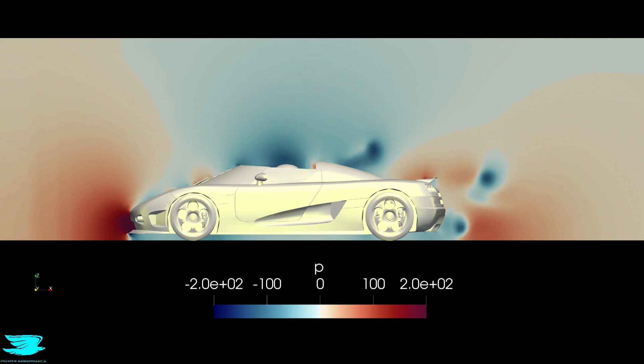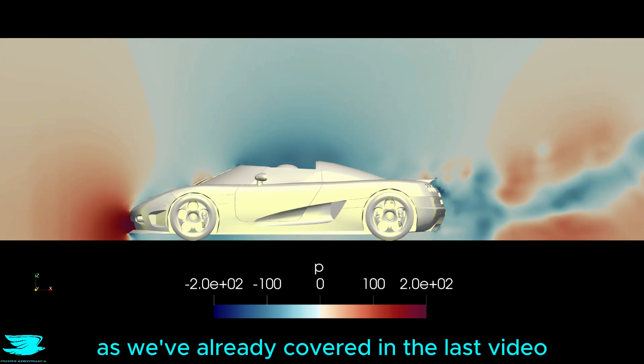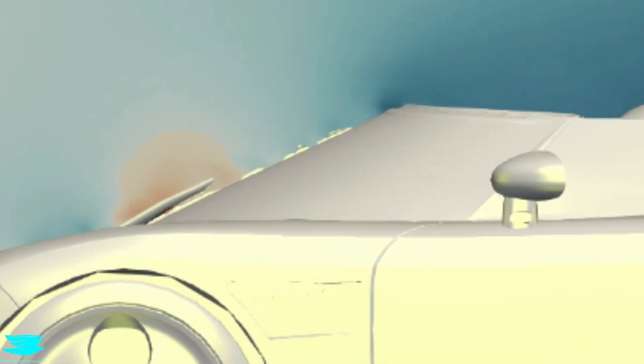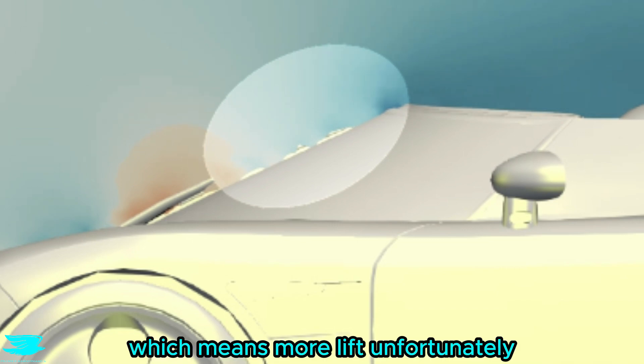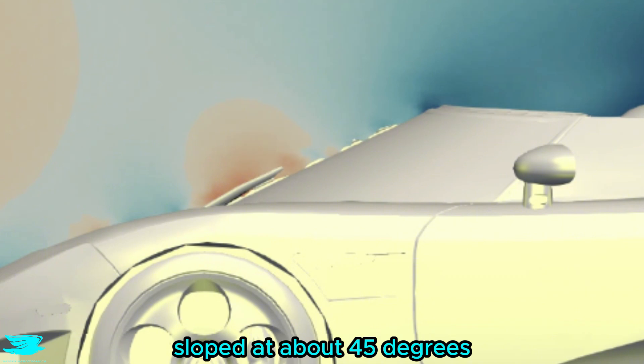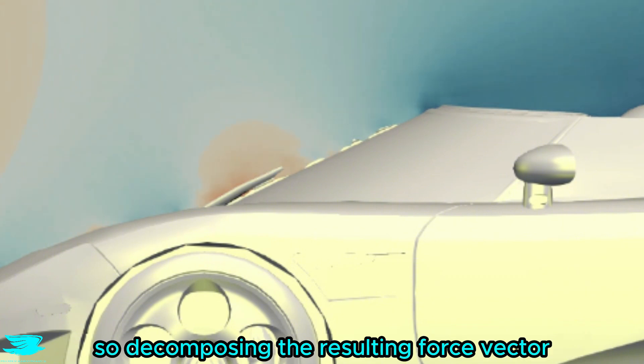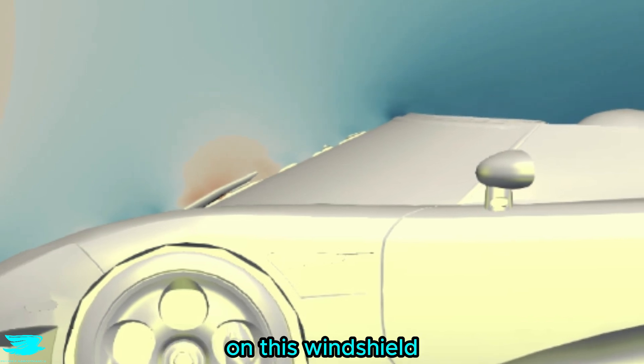Looking at the pressure, I don't want to cover the underbody too much because it is very similar to the roofed seg as we have already covered in the last video. But looking at the front windshield, we have lower pressure on the top half of it than the roofed seg, which means more lift unfortunately. The reason why is because this windshield is sloped at about 45 degrees, so decomposing the resulting force vector, both the lift and the drag get affected by the pressure on this windshield.